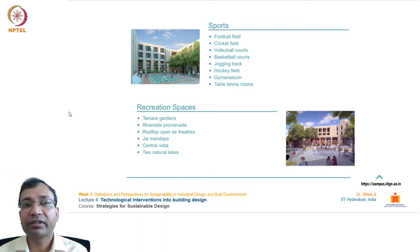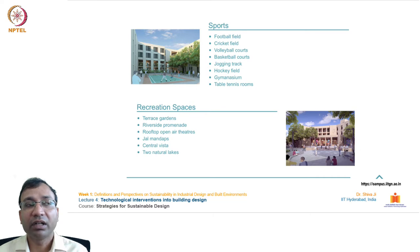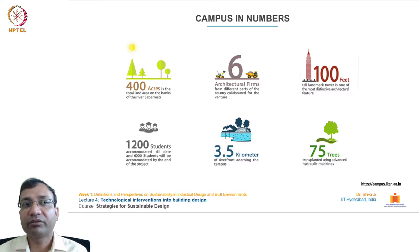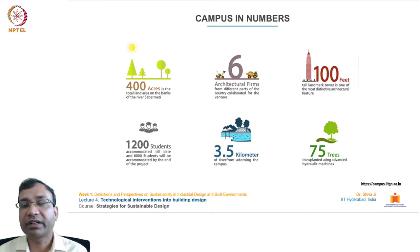Recreational spaces include terrace gardens, a riverside promenade, rooftop open-air theatres, Jalmandap, Central Vista, and two natural lakes are kept inside the IIT Gandhinagar campus. Sports facilities include football, cricket, volleyball, jogging track, hockey, gymnasium, and other indoor games like table tennis. As highlights: 400 acres total land area on the banks of river Sabarmati, six architectural firms from different parts of the country collaborated, a 100-feet tall landmark tower is one of the most distinctive architectural features, and 1200 students are accommodated till date with 6000 to be accommodated by project end.